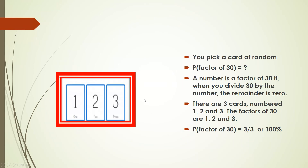We will consider another example. Suppose you pick a card at random — the cards are one, two, and three. The question is: what is the probability of picking a factor of 30? A number is a factor of 30 if when you divide 30 by that number, the remainder is zero. So there are three cards: one, two, and three.